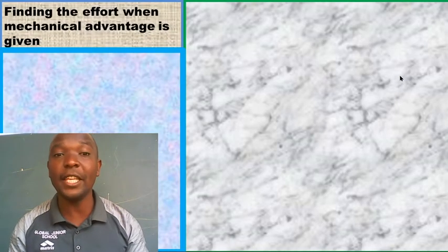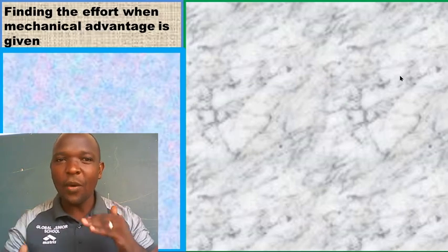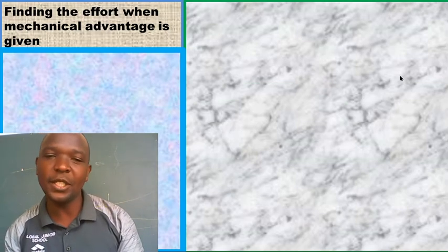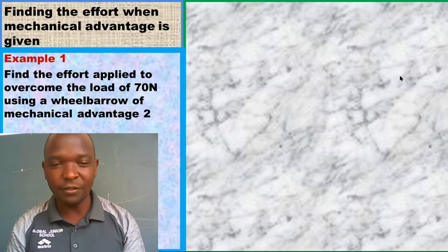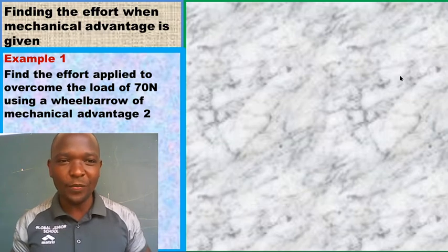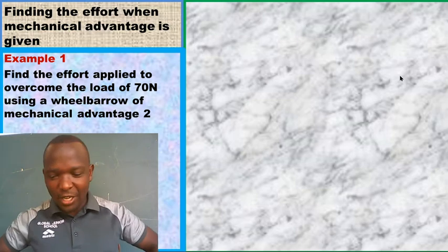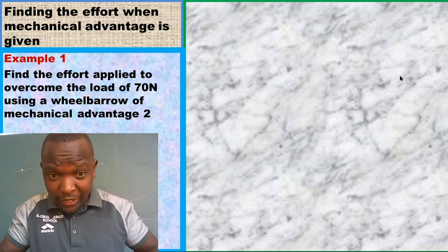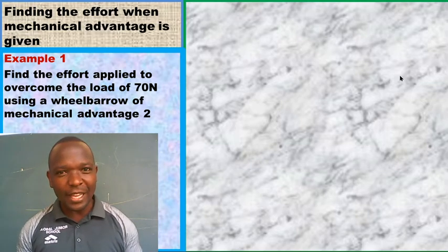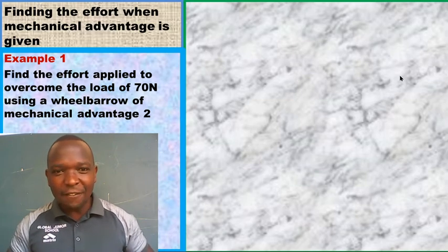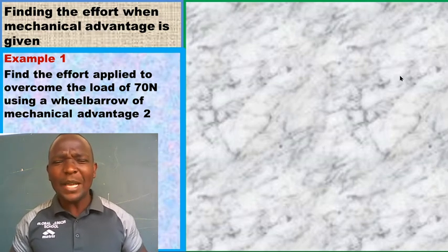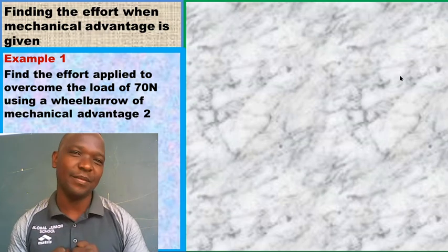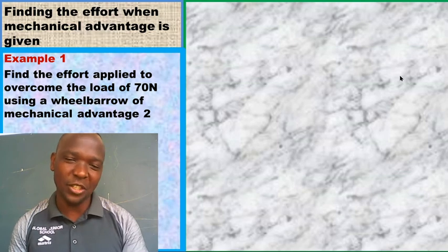Let us try finding the effort when mechanical advantage is given. Example: Find the effort applied to overcome a load of 70 newtons using a wheelbarrow with a mechanical advantage of 2. You have the load in the wheelbarrow — 70 newtons — and the mechanical advantage is 2. They want us to find the effort: how much force are you applying to push that load?